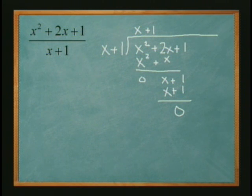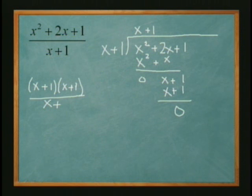Basically, if you factor this out, you would get x plus 1 times x plus 1 on top. And basically, if you divide it by x plus 1, you would cancel out one of those, just leaving you with x plus 1.